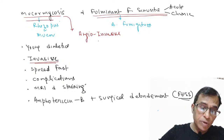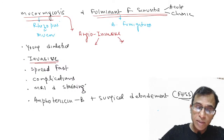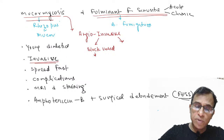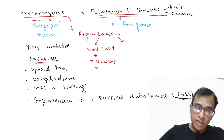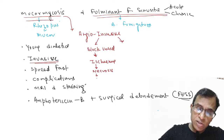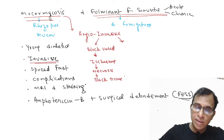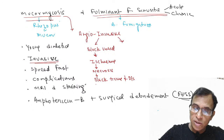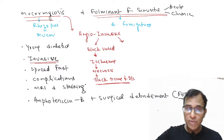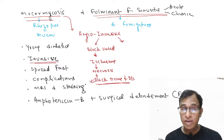Because mucormycosis is angio-invasive, it does two things: it blocks the blood vessel, causing ischemia, which leads to necrosis. So mucormycosis is a necrotizing disease, and necrosis causes black tissue and discharge. Because the tissue becomes black due to necrosis, that is why the name 'black fungus' comes. The fungus itself is not black — it is called black fungus because the tissue becomes black due to necrosis.